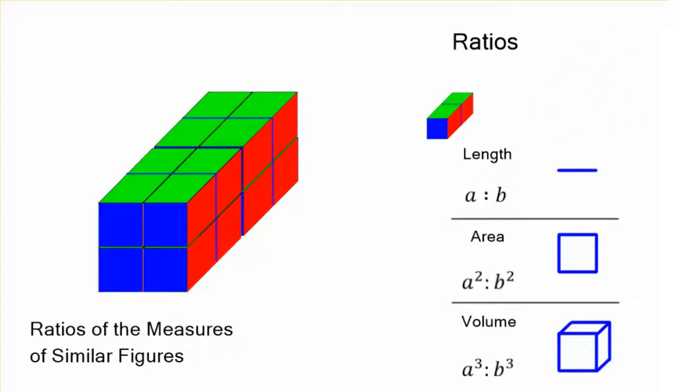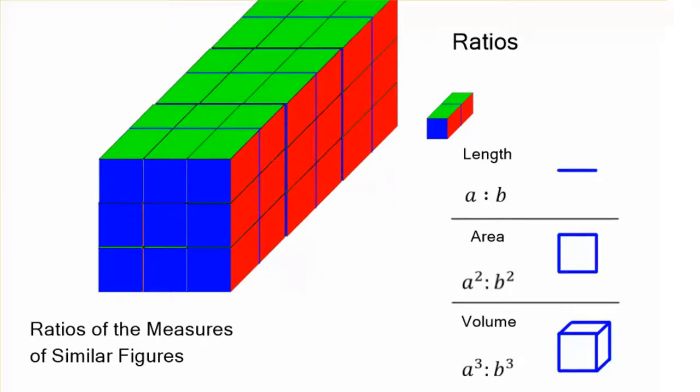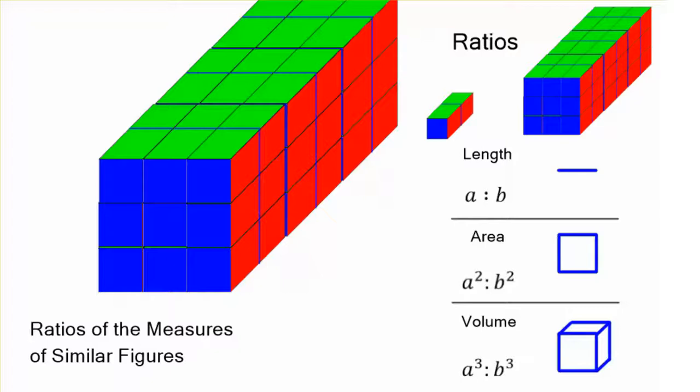Let's do another example. This time, let's make it 3 times as long and wide and tall. The ratio of our lengths is going to be 1 to 3. And then for the area, it's 1 squared to 3 squared, 1 to 9. Notice there's 9 squares where before there were only 1 in the front. And the volume is 1 to 27. It's a lot more.